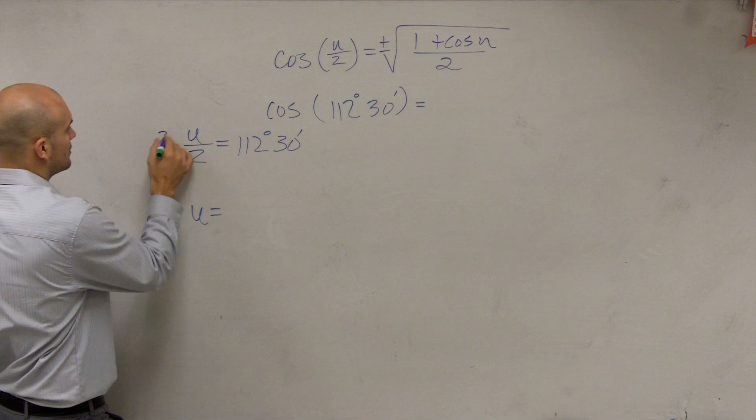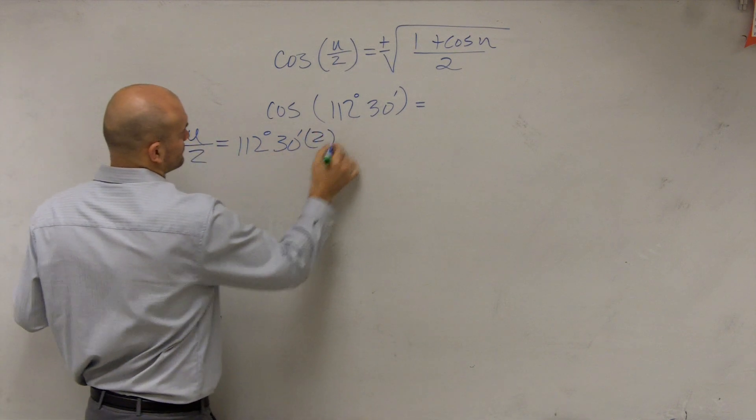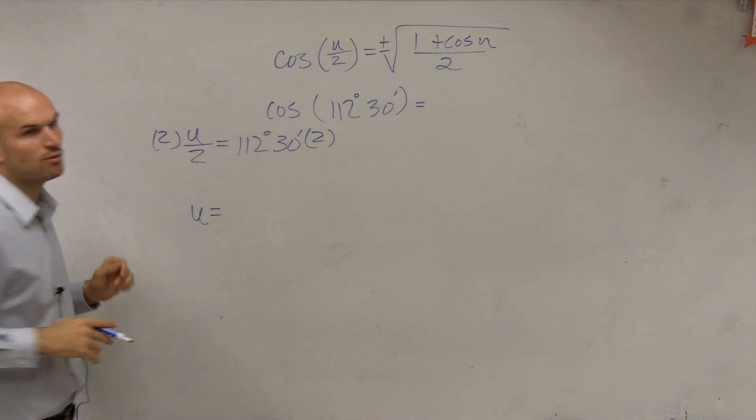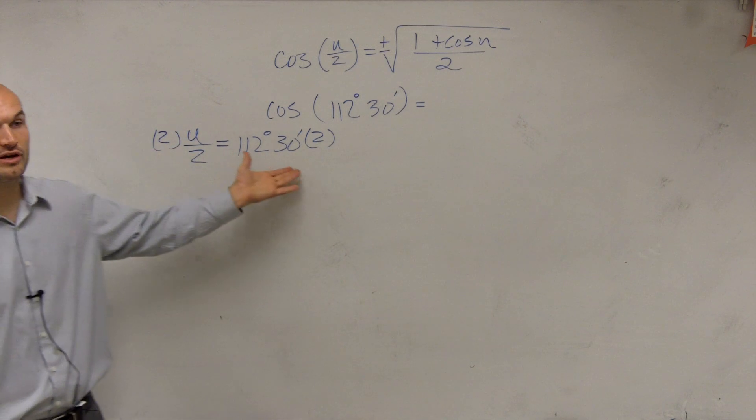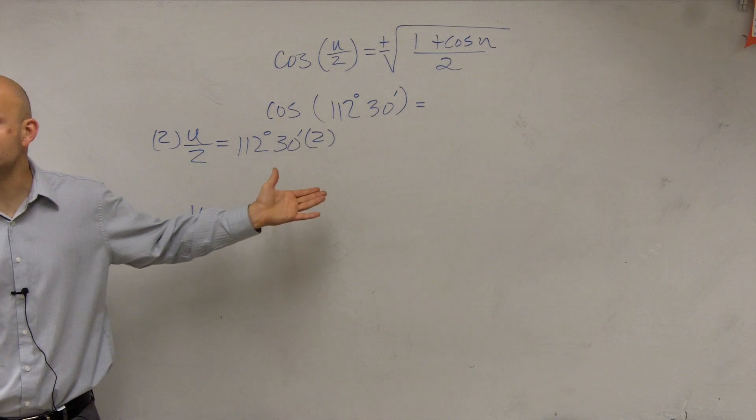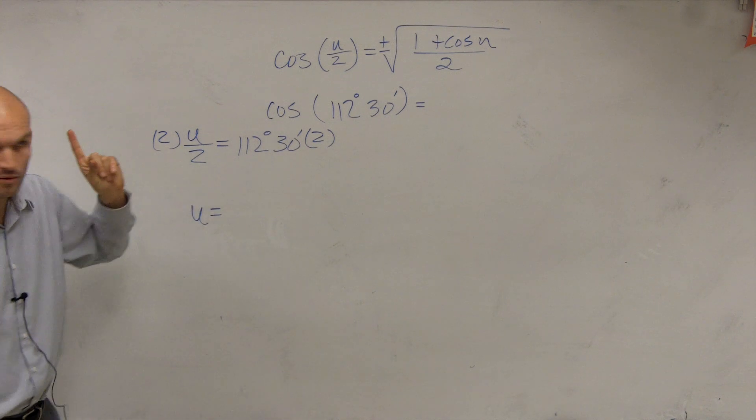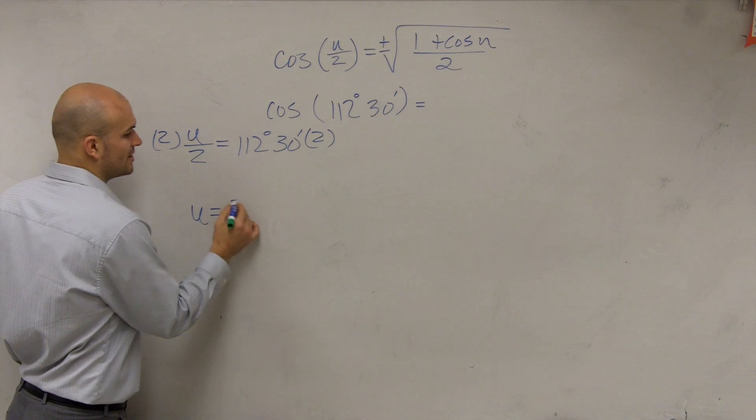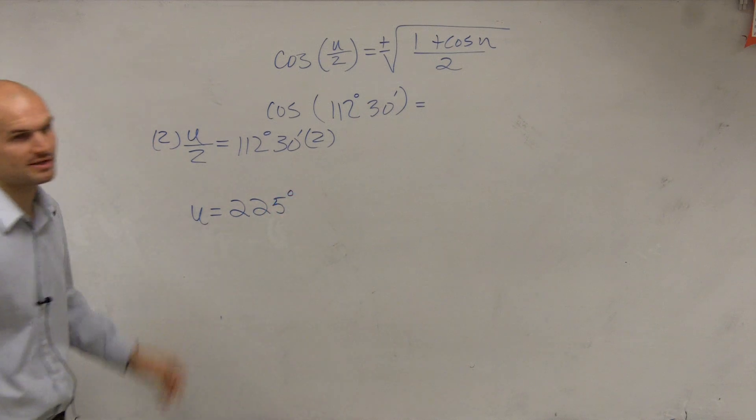So again, what we do, multiply by 2. And 112 divided by 2 is 224. 30 minutes divided by 2 is 60 minutes. And 60 minutes equals 1 degree. So we'll have 225 degrees.